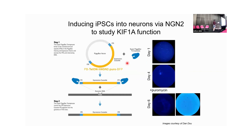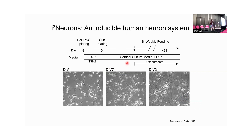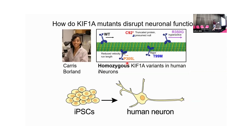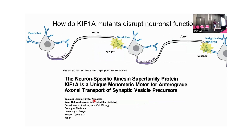We received a vial of iPSCs and wanted to turn them into the cell that matters most for KIF-1A disease: the human neuron. The way we do this in the Holtzberg lab is by stably integrating a driver — specifically NGN2 — which turns the iPSCs into neurons relatively quickly to assess different cellular functions. We focused on homozygous variants, meaning all protein in the cell carries the mutation, which helps us more easily dissect what that mutation is doing and clears away complications.